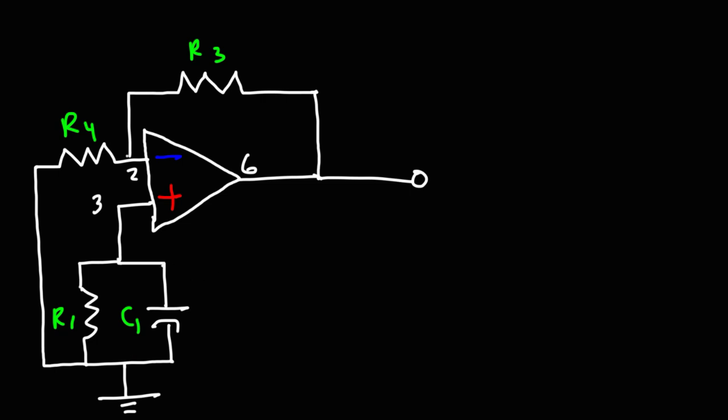Next, we're going to have another capacitor and a resistor, which connects to pin 3 of the op amp and pin 6, the output. So this is going to be C2 and R2. So that's the basic design of the Wien bridge oscillator.